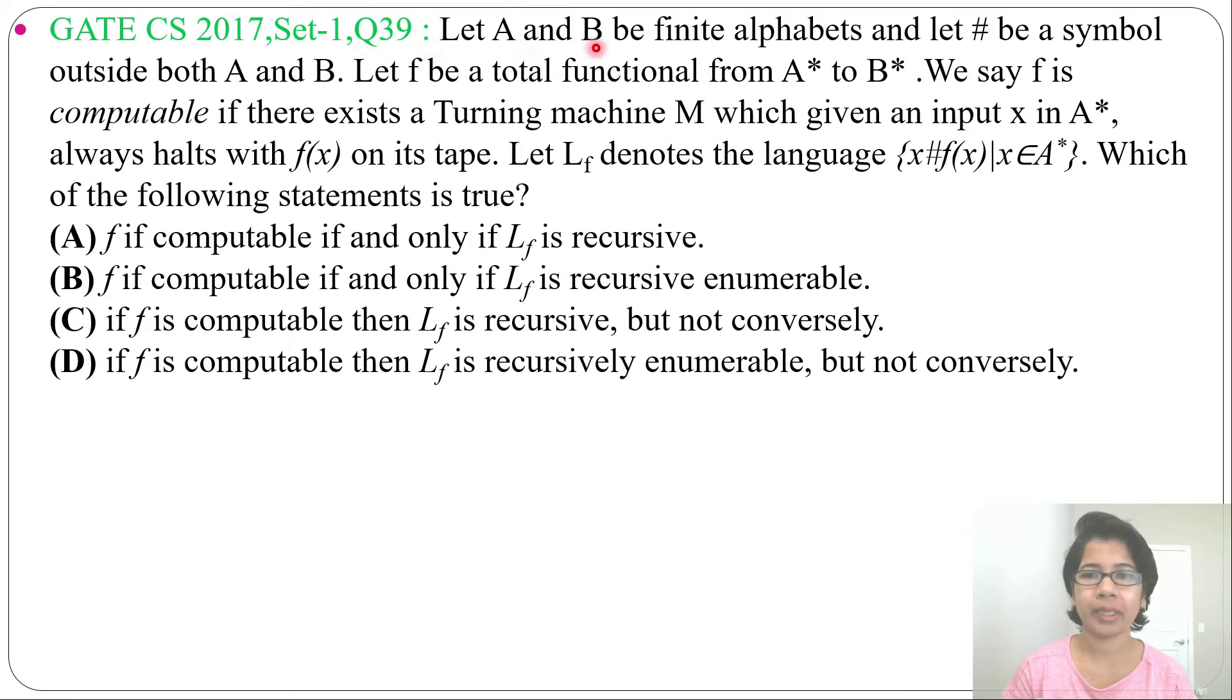Let A and B be finite alphabets and let # be a symbol outside both A and B. Let F be a total function from A* to B*. We say F is compatible if there exists a Turing machine M which given an input x in A* always halts with f(x) on its tape.